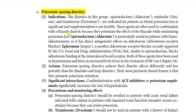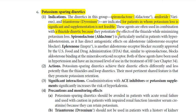The drugs in the potassium-sparing diuretics group — spironolactone, amiloride, and triamterene — are indicated for patients in whom potassium loss is significant and supplementation is not feasible; that is, patients who have excessive potassium loss for which cardiovascular adverse effects are a concern. These agents are often used in combination with thiazide diuretics because they potentiate the effect of thiazides.